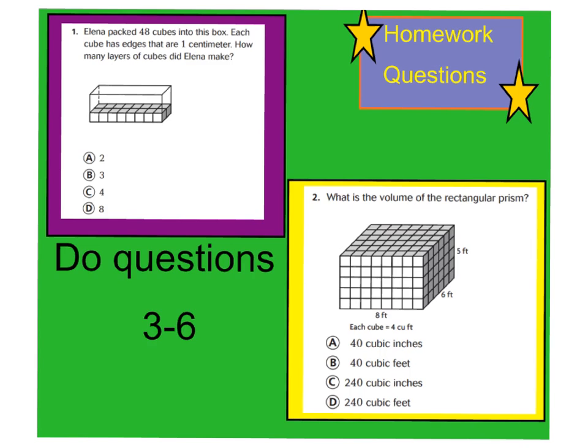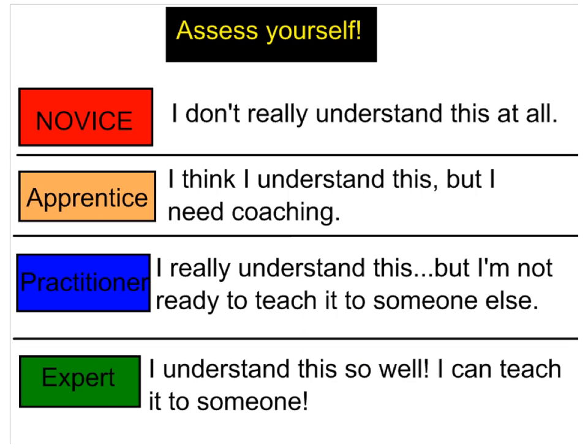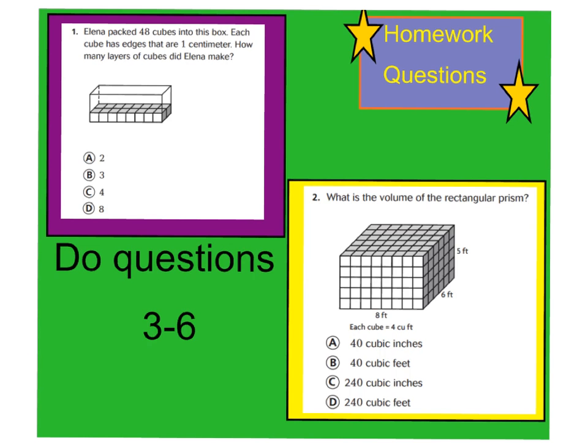Okay, for questions number 1 and 2, you'll be doing on your own. Read the directions carefully. And then answer your questions 3 through 6 for your spiral review. Pay attention on question number 1 because it says Elena packed 48 cubes into this box. Each cube has edges that are 1 centimeter. How many layers of cubes did Elena make? When we talk about layers, we're really talking about the height. She already has the first layer down. You have to know how many more layers she can use. Remember, the total volume is 48 cubes, and you already know the length and the width. So my length is 8 times 2 times h should equal 48. And then question number 2, you can use your formula of length times width times height to help you solve that one. Don't forget somewhere on your page to assess yourself. And tomorrow in class, we will investigate with finding volume for rectangular prisms in class. Have a great night. Bye-bye.